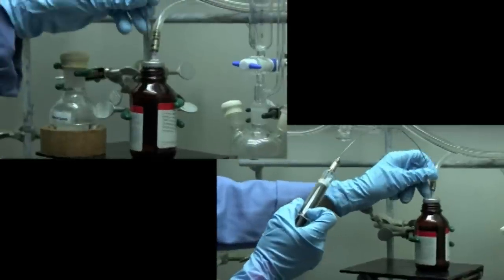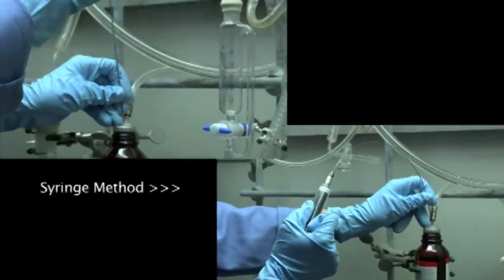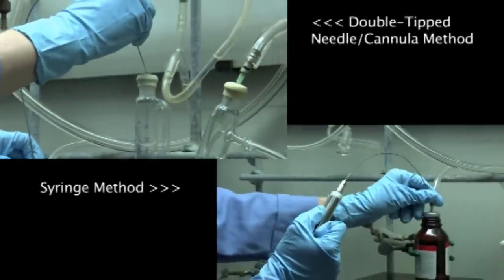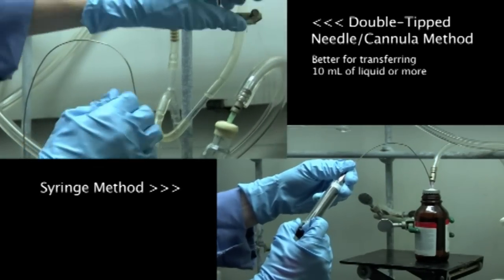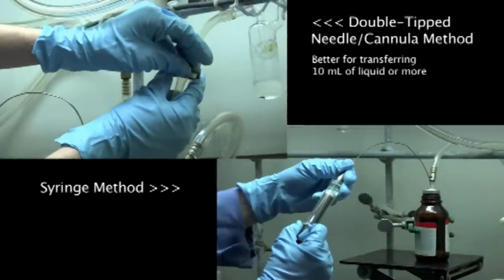Pyrophoric liquid reagents can be transferred by either using a syringe or a double-tip needle, also known as a cannula. We recommend using the double-tip needle or cannula method if you plan to transfer 10 milliliters of liquid or more.